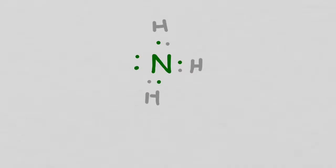Nitrogen can form three covalent bonds because it has three spaces to share. A hydrogen atom might attach to each of these three attachment points and share an electron with nitrogen in order to complete its outer octet. This compound, NH3, is also known as ammonia, which is a very powerful cleaning product.